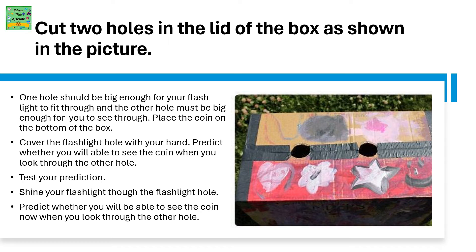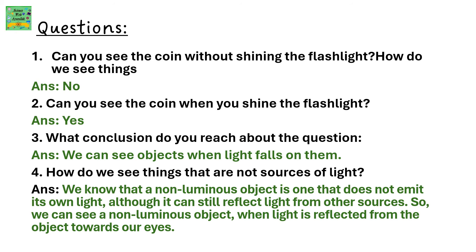Place the coin on the bottom of the box. Cover the flashlight hole with your hand. Predict whether you will be able to see the coin when you look through the other hole, then test your prediction. Shine your flashlight through the flashlight hole and predict whether you will be able to see the coin now. Can you see the coin without shining the flashlight? No. Can you see the coin when you shine the flashlight? Yes. Conclusion: we can see objects when light falls on them.